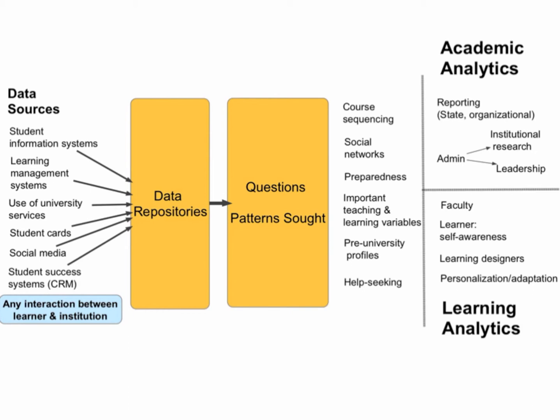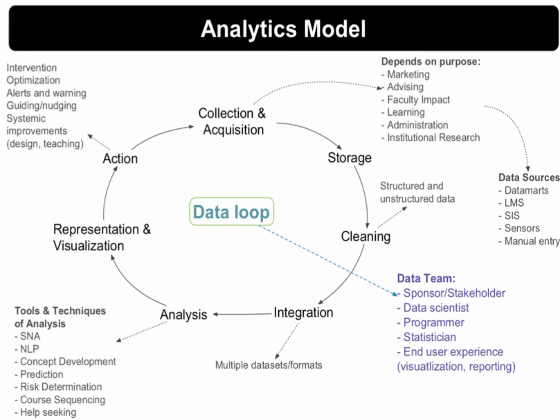Two students could both be exhibiting similar behavior, but the system would treat them differently in terms of how it's assessing or evaluating that student. This comes out in two perspectives: there's academic analytics, which is really using data and analytics to improve organizational performance, and there's learning analytics — which we're focused on in this course — targeting what the student and faculty are actually doing, and ways to improve both the teaching and learning aspects. The analytics model we're looking at can change for a variety of contexts.